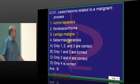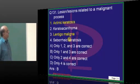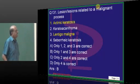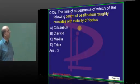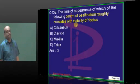Actinic keratosis and lentigo maligna — these are examples of a malignant process.